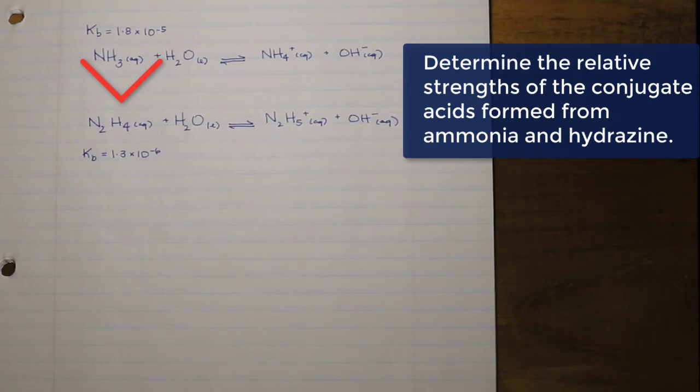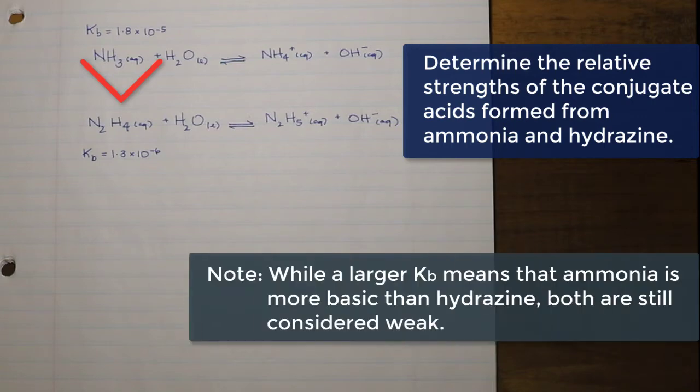When ammonia is placed into a solution it is going to produce a greater number of hydroxide ions than the hydrazine is, and we can tell that by the extent or the magnitude or the size of the KB, and so therefore it's going to have greater basic properties and therefore be a stronger base.